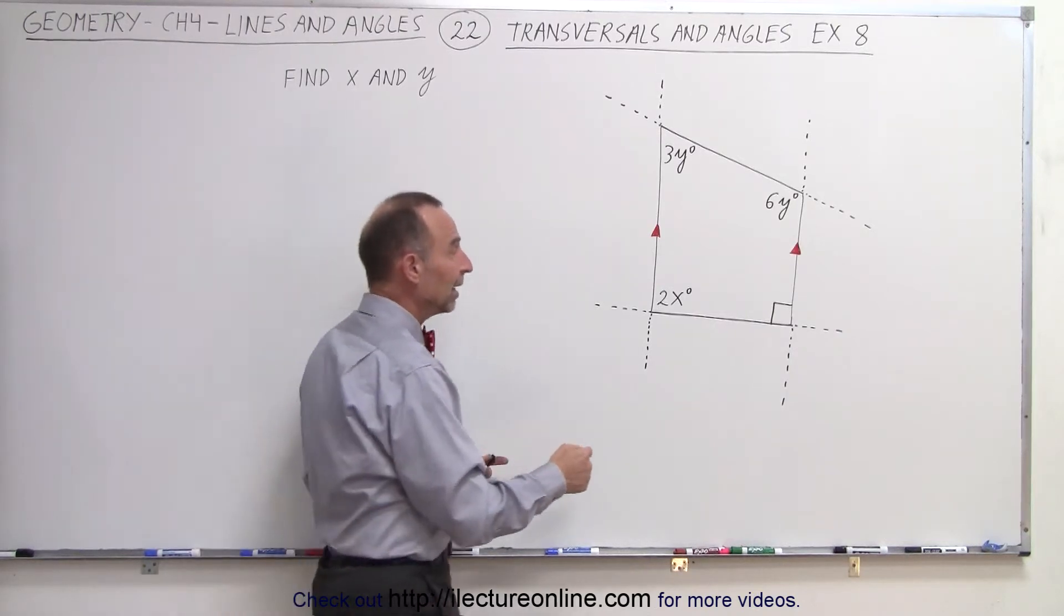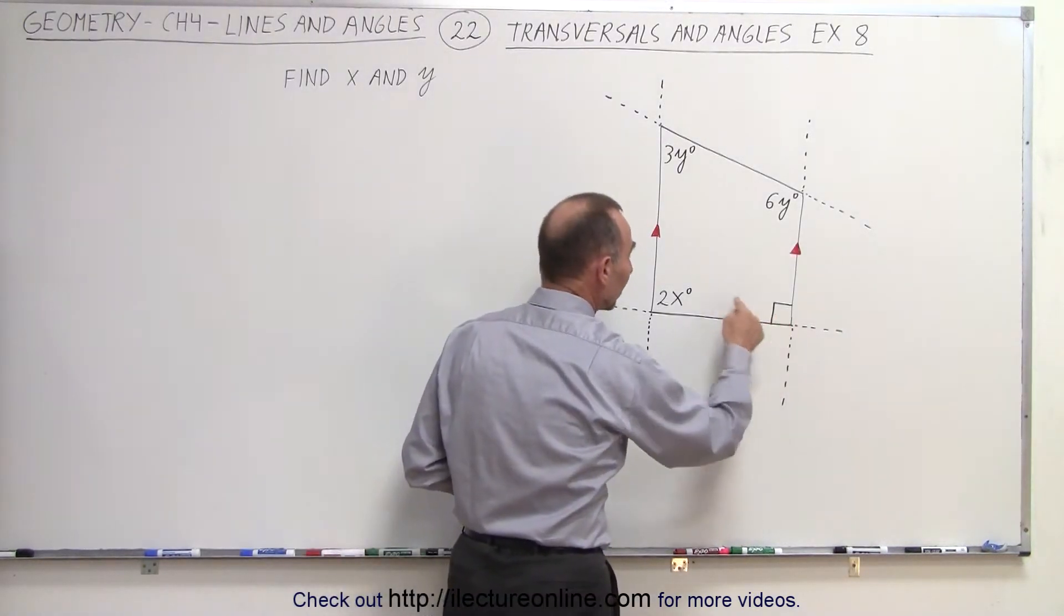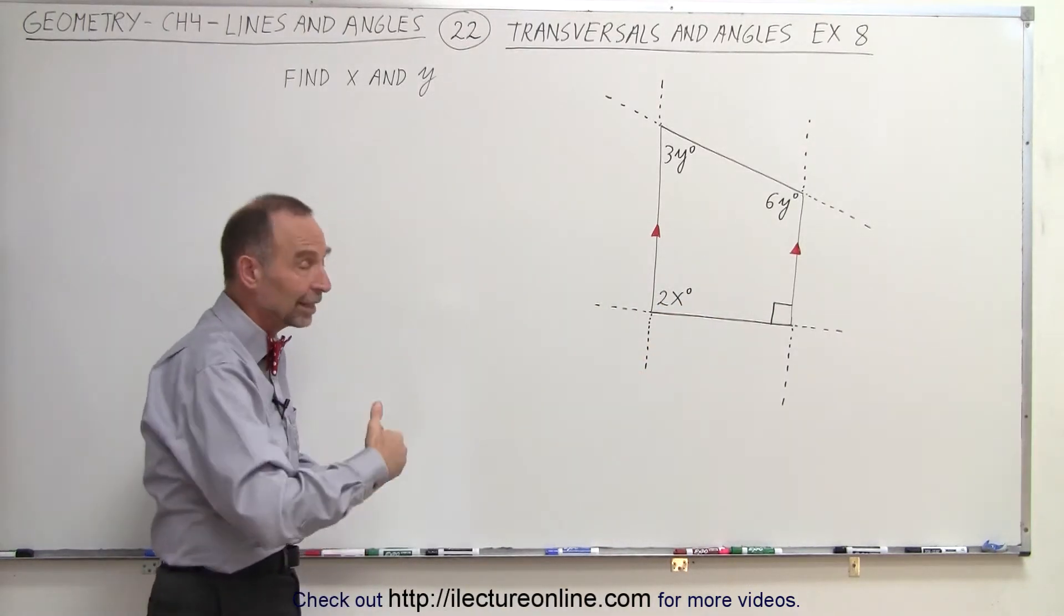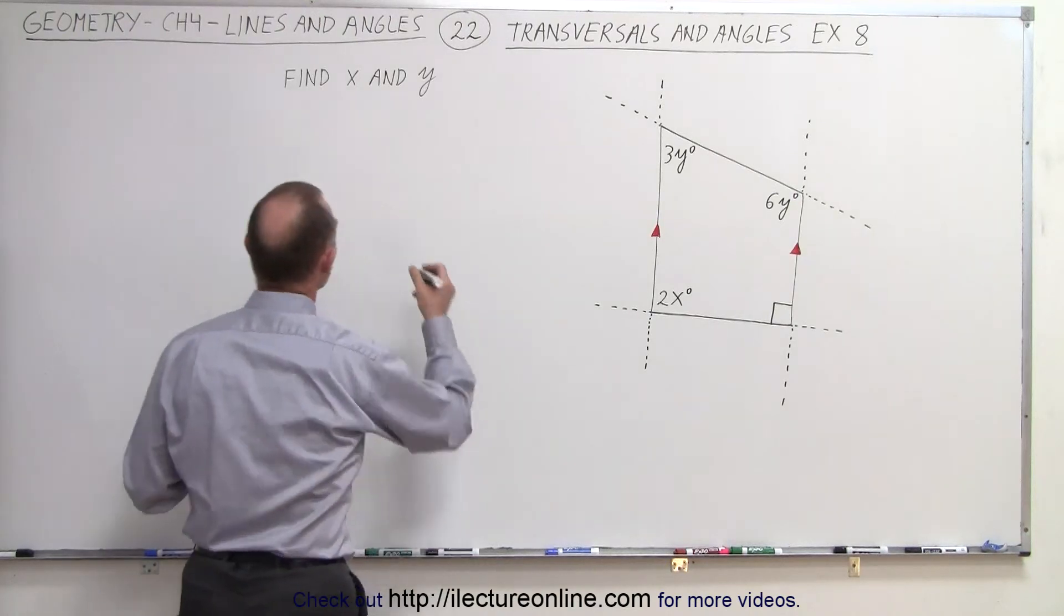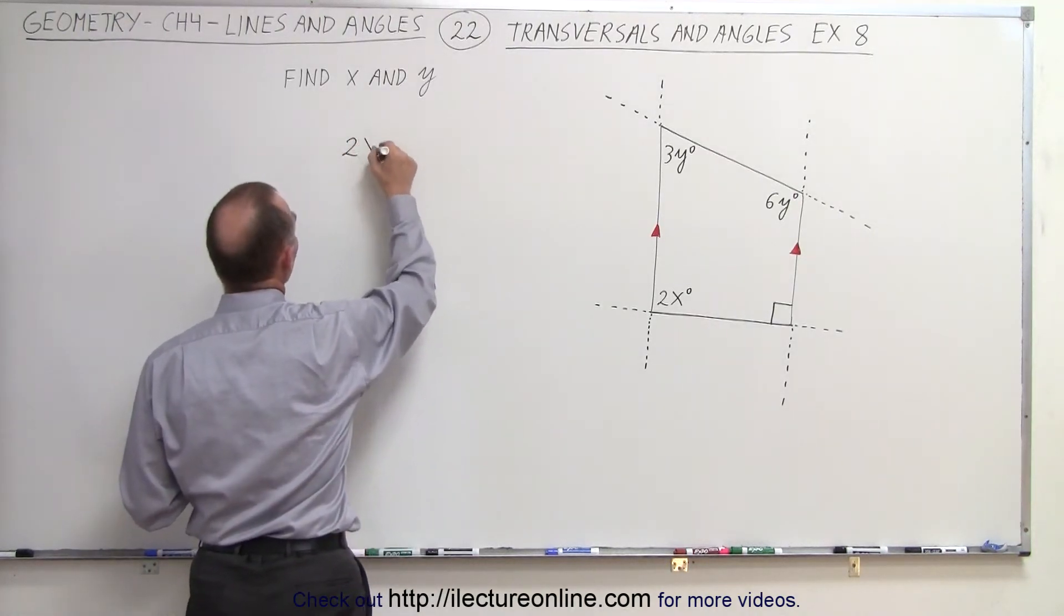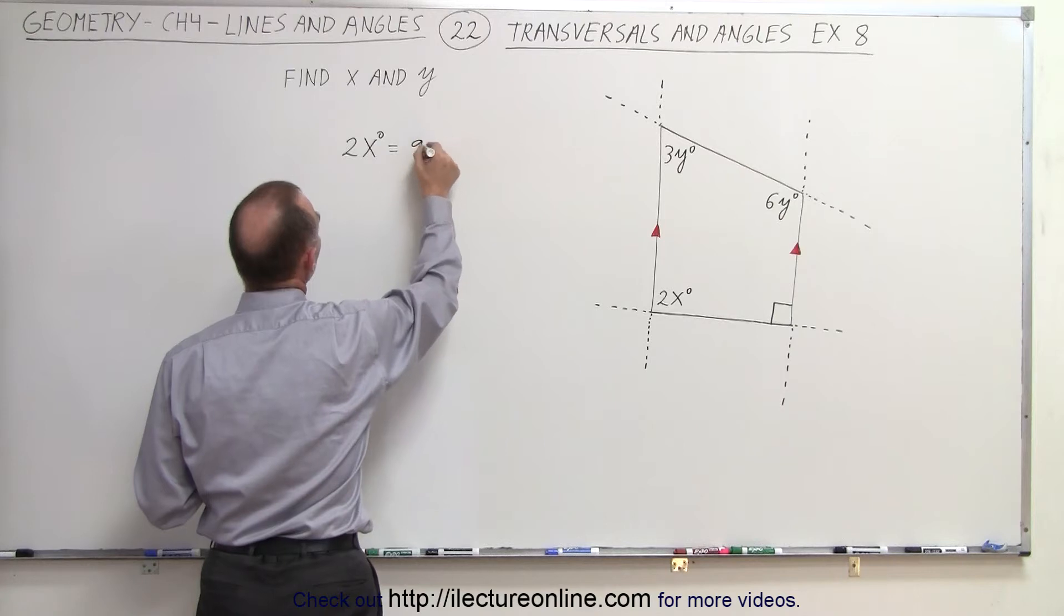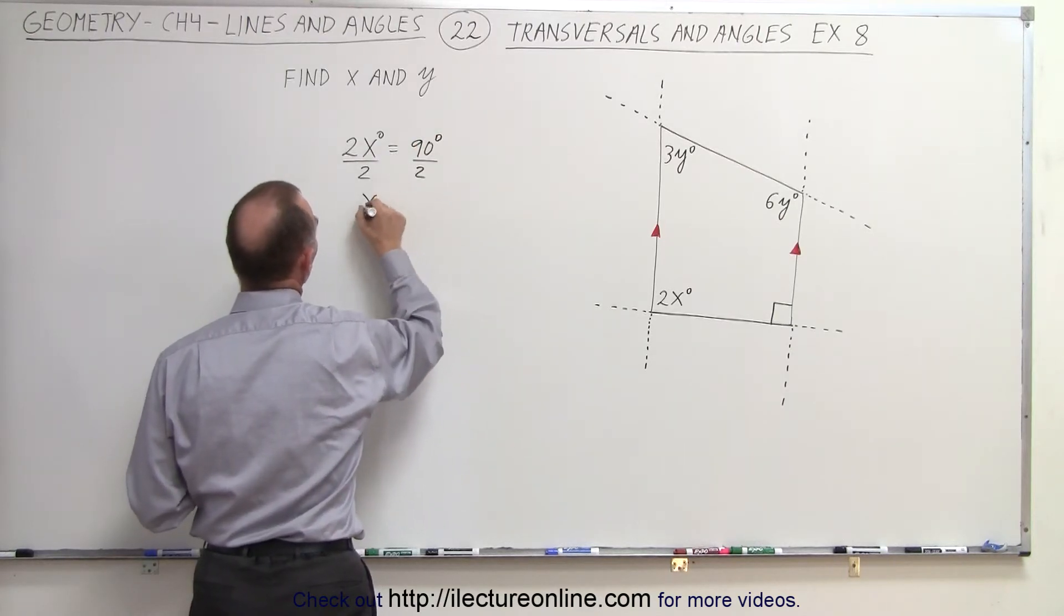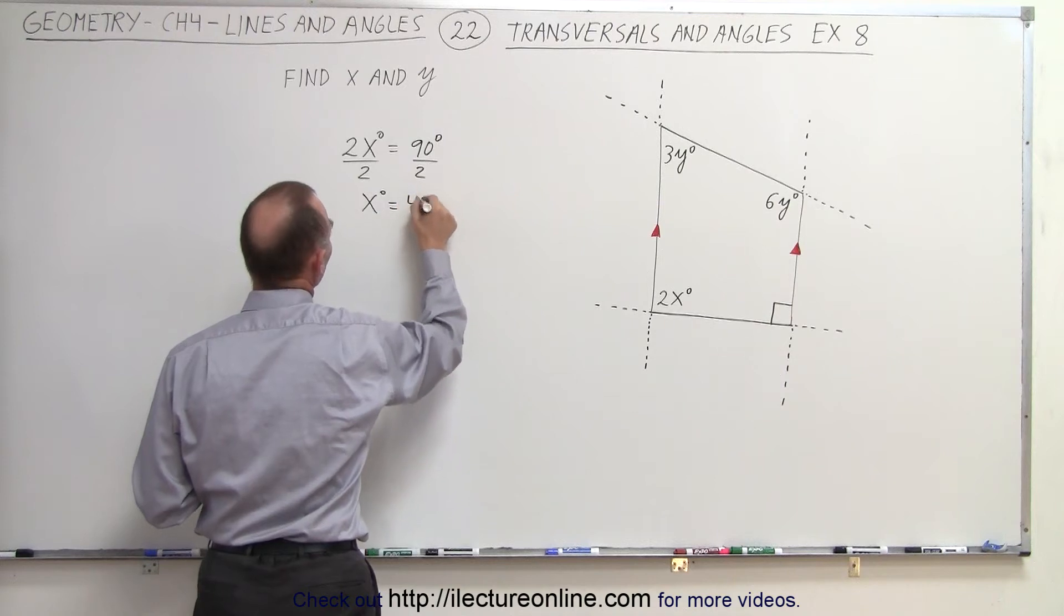They're supplementary. But if one of the angles is 90 degrees, then necessity states that the other angle must be 90 degrees as well, because 90 plus 90 is 180 degrees. By that, we can then conclude that 2x degrees equals 90 degrees. Divide both sides by 2, we get x equals 45 degrees.